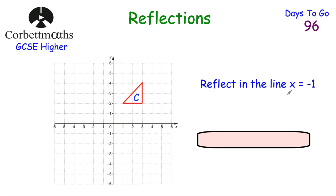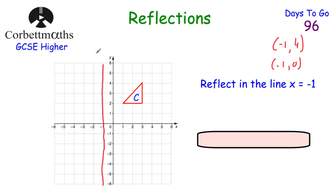Here we have triangle C and we've been asked to reflect it in the line x equals negative one. First, draw the mirror line — x = -1 is a vertical line through all coordinates with x-coordinate of negative one, such as (-1, 4) or (-1, 0). To reflect the triangle, focus on each corner: measure how many squares each point is from the mirror line and plot the same distance on the other side. After reflecting all three corners and joining them, we've reflected C in the line x equals negative one.